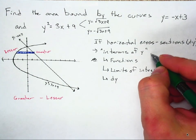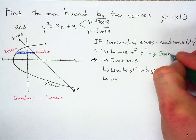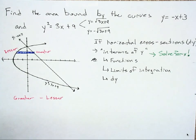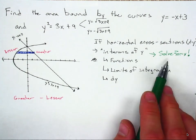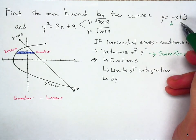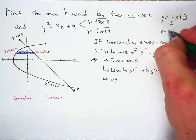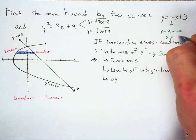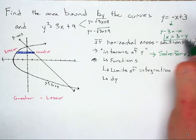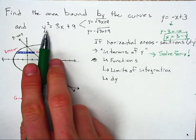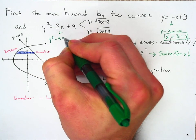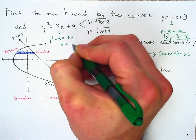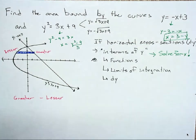What 'in terms of y' means is that we need to solve for x. In order for something to be in terms of y, y needs to be in the equation, not x — so we need to solve for x instead. So y equals negative x plus 3 becomes, as you solve for x: y minus 3 equals negative x, or x equals 3 minus y. That's going to be one equation you use. And then for y squared equals 3x plus 9, do the same thing — solve for x: y squared minus 9 equals 3x, or x equals y squared minus 9, all over 3.